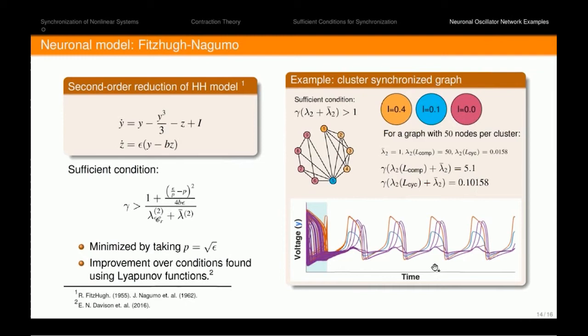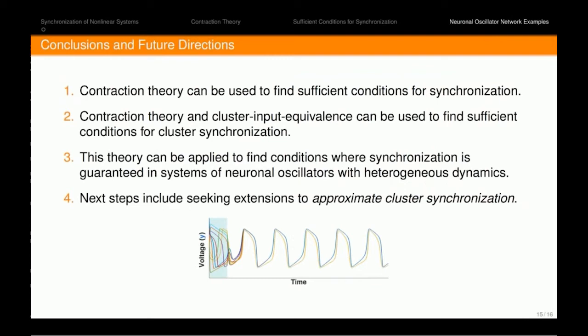So in conclusion, we have shown that contraction theory can be used to find sufficient conditions for synchronization, which has been studied very well before. We have extended this using cluster input equivalence to find sufficient conditions for cluster synchronization. And in particular, we've applied our theory to find conditions where synchronization can be guaranteed in systems of neuronal oscillators, particularly the FitzHugh-Nagumo model with heterogeneous dynamics. However, our theory is generalizable to any nonlinear system. And our next steps include seeking extensions to approximate cluster synchronization, which is relevant to a few of the last talks where the clusters don't satisfy that exact synchronization guarantee that we are required in the beginning. Thank you very much.